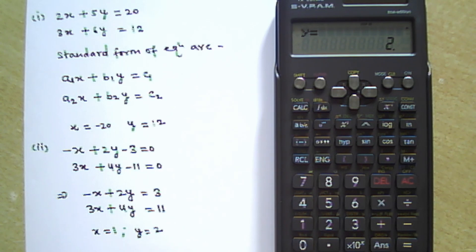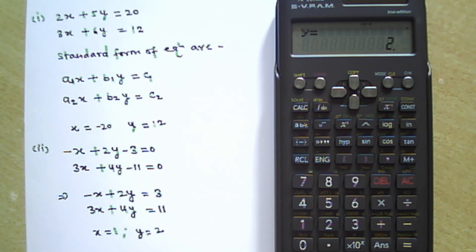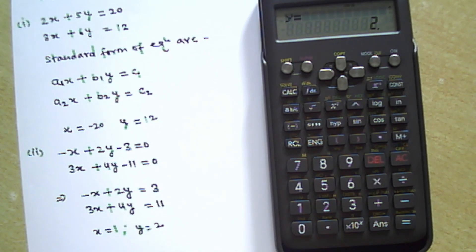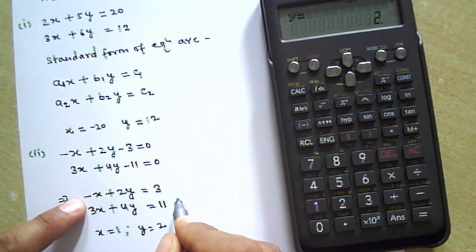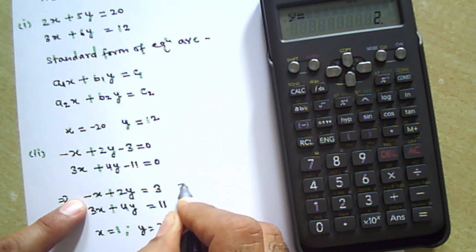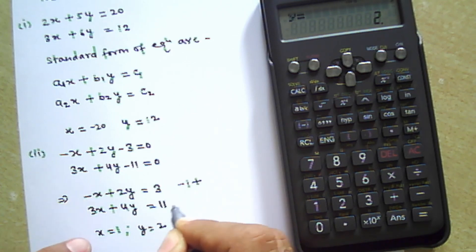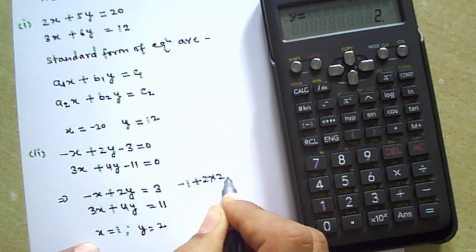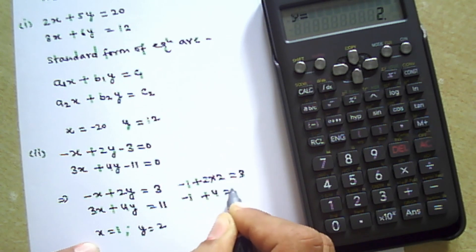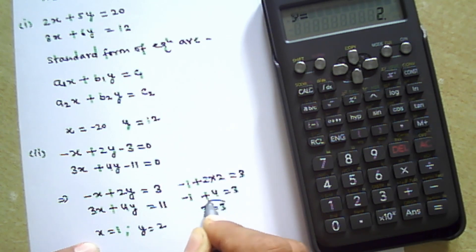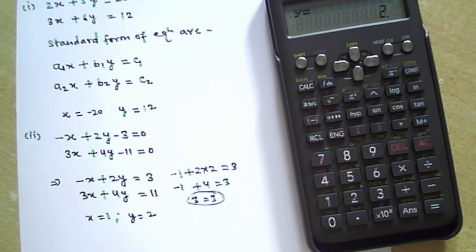You can check by putting these values in the equation to verify whether they satisfy it or not. Putting values into the first equation: -x = -1, plus 2y = 2 × 2 = 4, equals 3. So -1 + 4 = 3, or 3 = 3. That means your roots are correct. This was the method for solving two-variable linear equations.